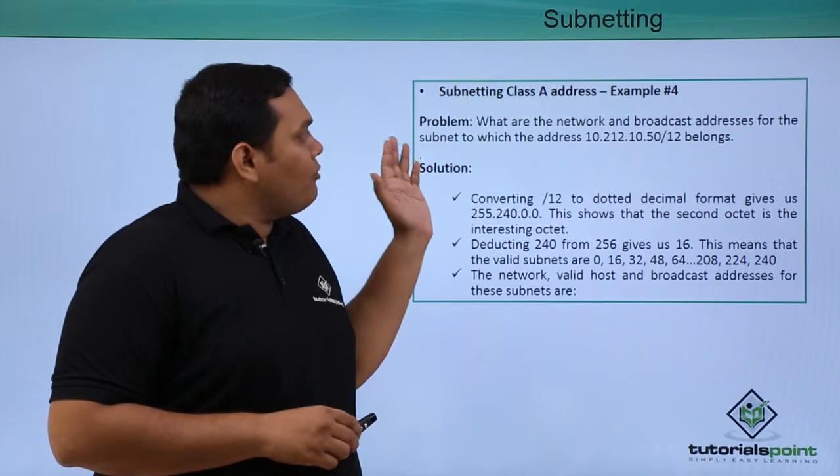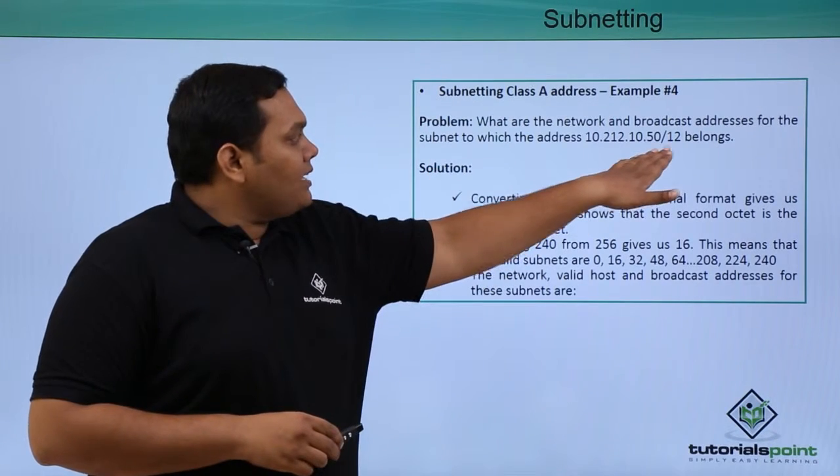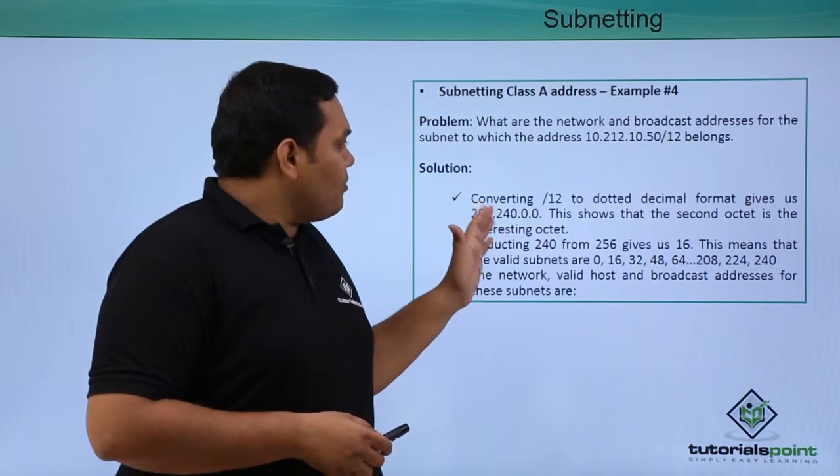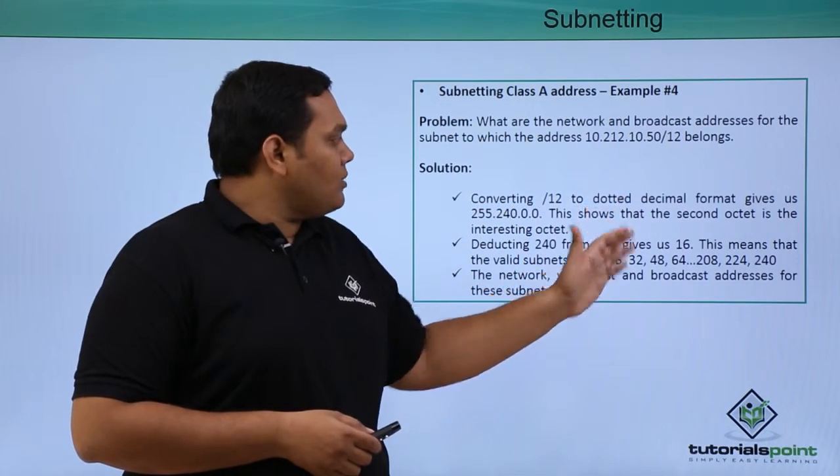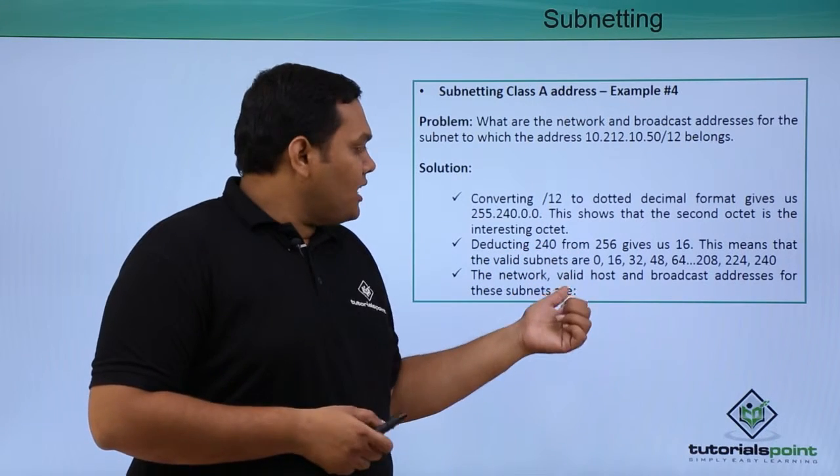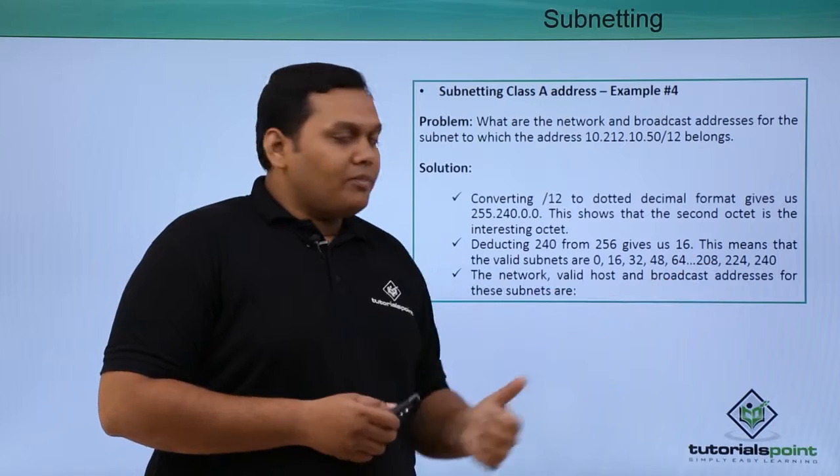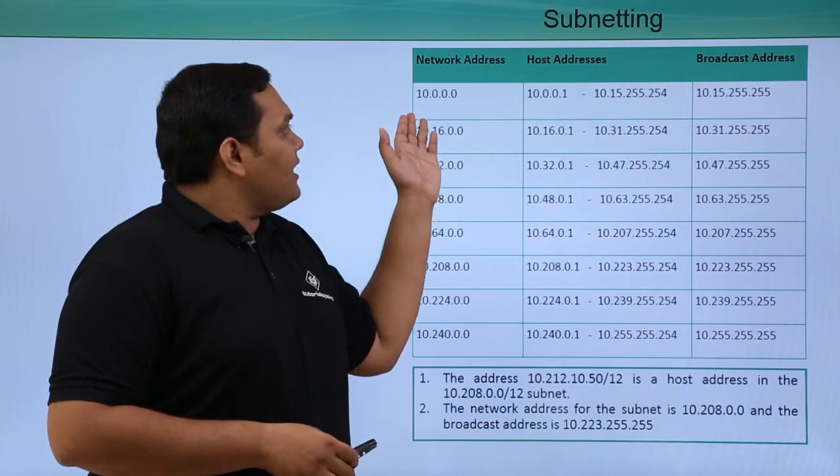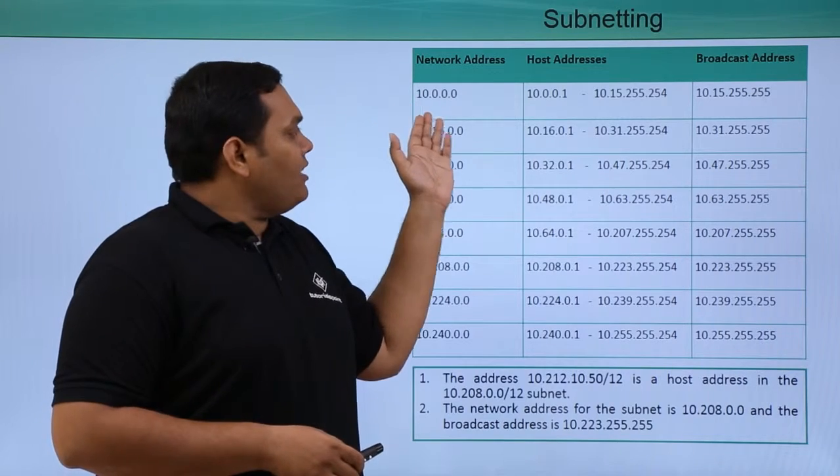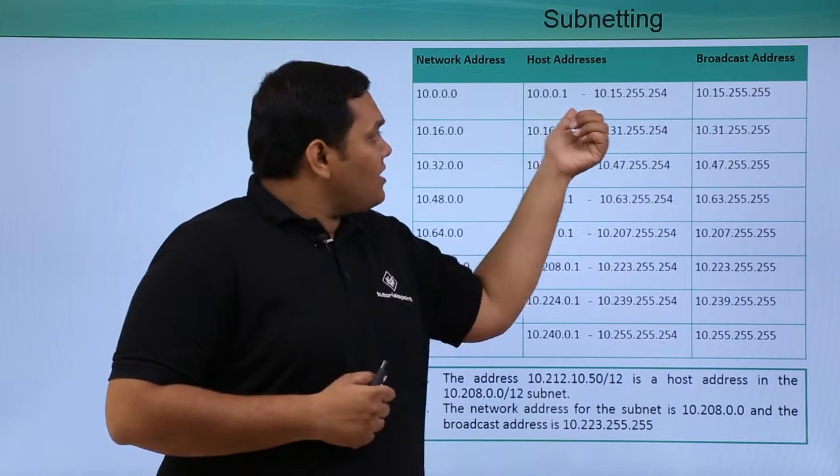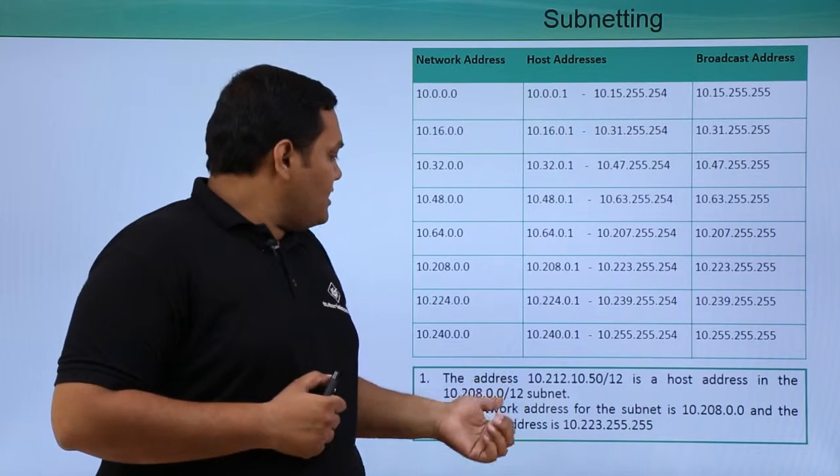Example 4 is also mentioned, but here the slash notation is given as /12. The same scenario is used by converting into dotted decimals and by subtracting the interesting octet number from 256, which gives you how the subnets are classified. You can see clearly the network address, broadcast address, and host address ranges are given.